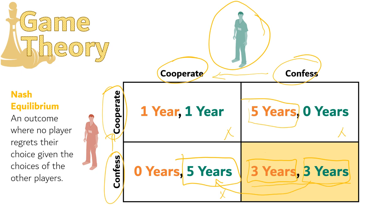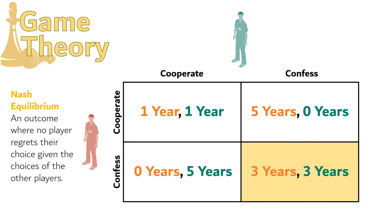Of course, they both would prefer to move to the cooperative outcome. But that is the key insight of the Nash Equilibrium: they can't change what the other person does — they can only change their own decision. So while both of them may long for the cooperative outcome, when they get stuck in the confess-confess outcome, they can't make that choice by themselves. The Nash Equilibrium is just thinking about your own decision, and so from that, we know this will be the outcome if both players follow their self-interest. This is where the game will end.